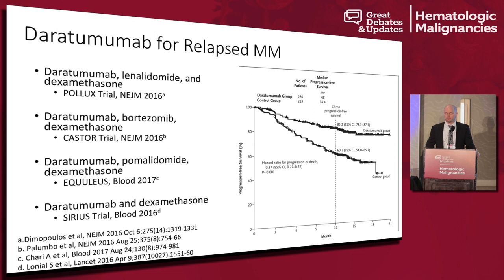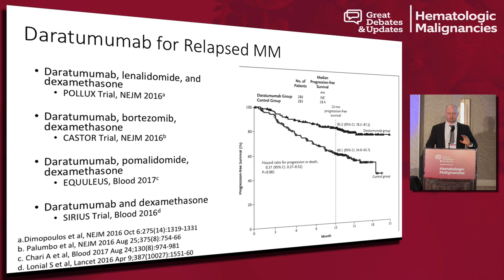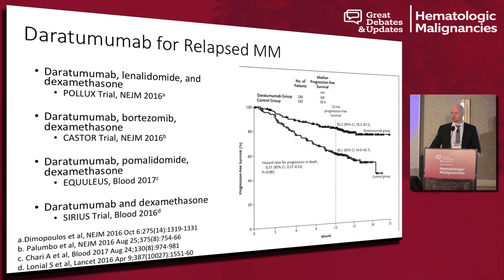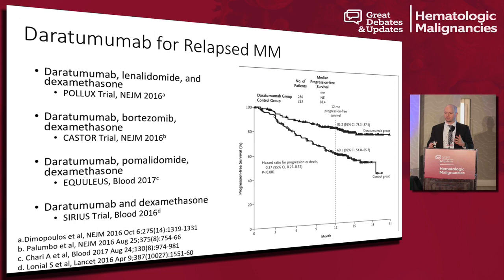Daratumumab is a monoclonal CD38 antibody and one of the most promising new agents over the last five years. It has been studied with several partners including lenalidomide in the POLLUX trial, bortezomib in the CASTOR trial, and pomalidomide in the EQUULEUS trial, as well as monotherapy — all showing improvement in progression-free survival. A common question from referring docs is: should I go with daratumumab or carfilzomib for a patient relapsed after transplant? As long as there are no compelling comorbidities pointing one way, there is not sufficient data to say one is better than the other in the first relapse setting. I typically prefer carfilzomib, as do many colleagues at the University of Washington, but either is a fine choice.